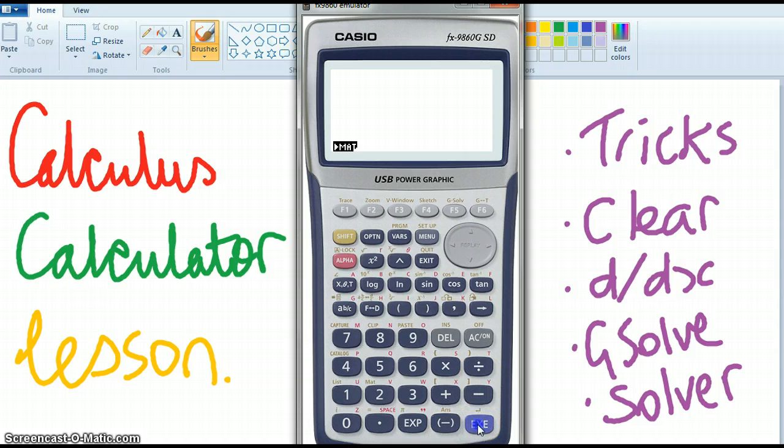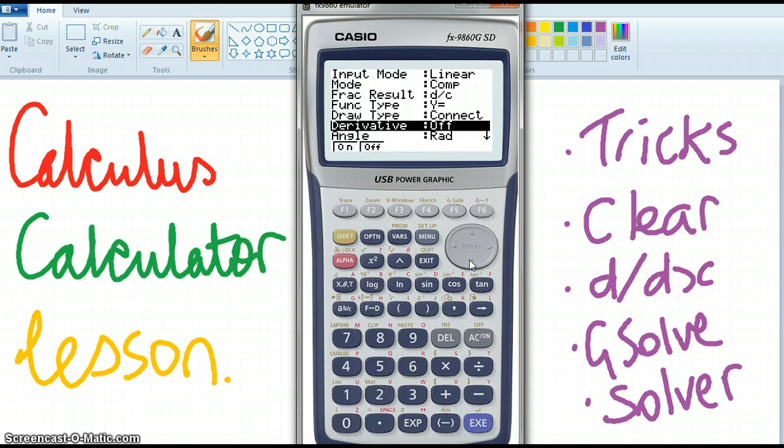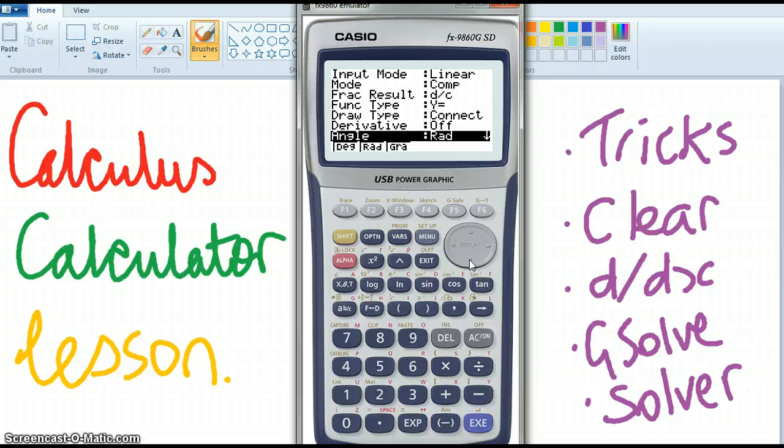So if we go into run and we go shift, set up you can see here that the angle has gone back to radians, so if you were doing trig or something you might want to put it back into degrees. Okay, we're not actually doing that for calculus but that's just a trick with your calculator that you need to know about.